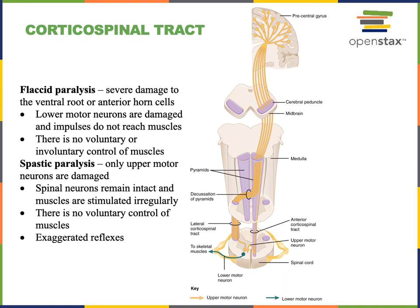The lower motor neuron has its cell body in the anterior gray horn and extends its axon out through the ventral root to a spinal nerve. The axon continues to travel through the spinal nerve down to the skeletal muscle, where it forms a synapse to stimulate contraction of that muscle, enabling motion of the body.